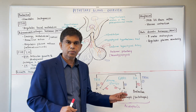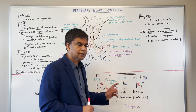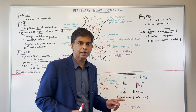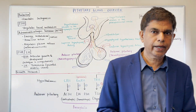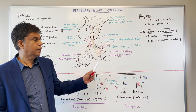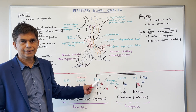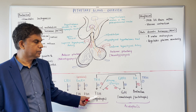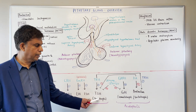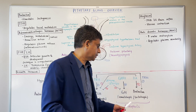The next hormone we're going to talk about is TSH. You have the TRH - thyrotropin releasing hormone - from the hypothalamus. Hypothalamus releases thyrotropin releasing hormone and that produces thyroid stimulating hormone, which is TSH. TSH then acts on the thyroid gland to produce hormones like T3 and T4.